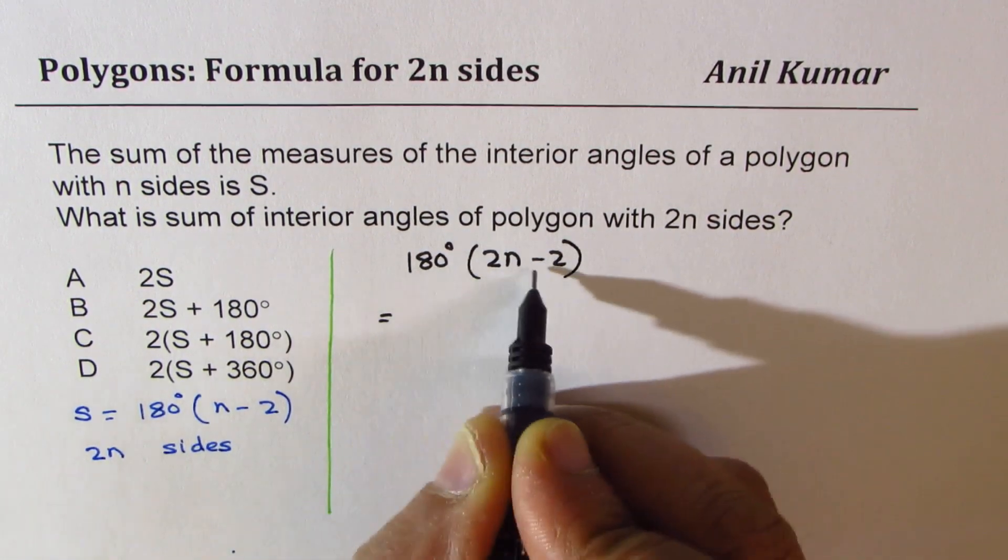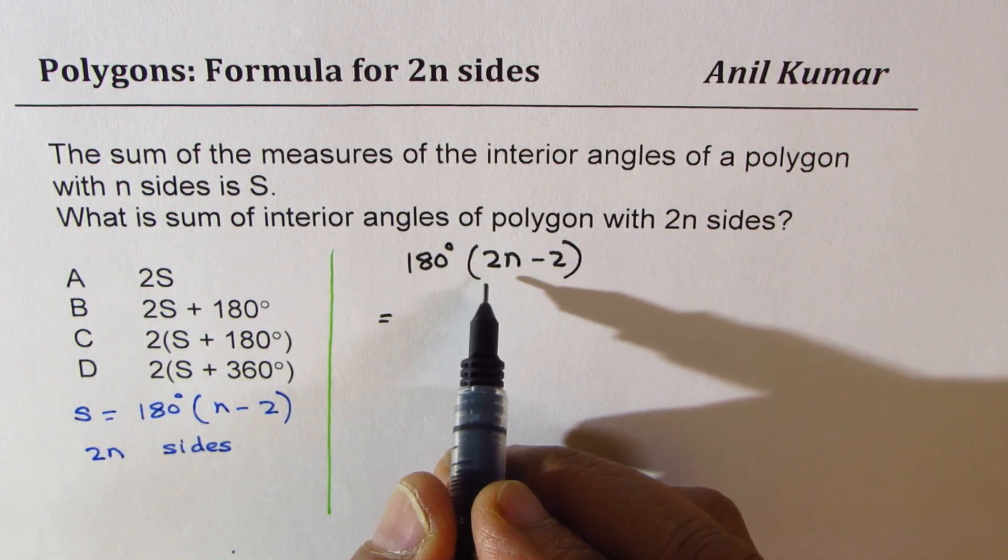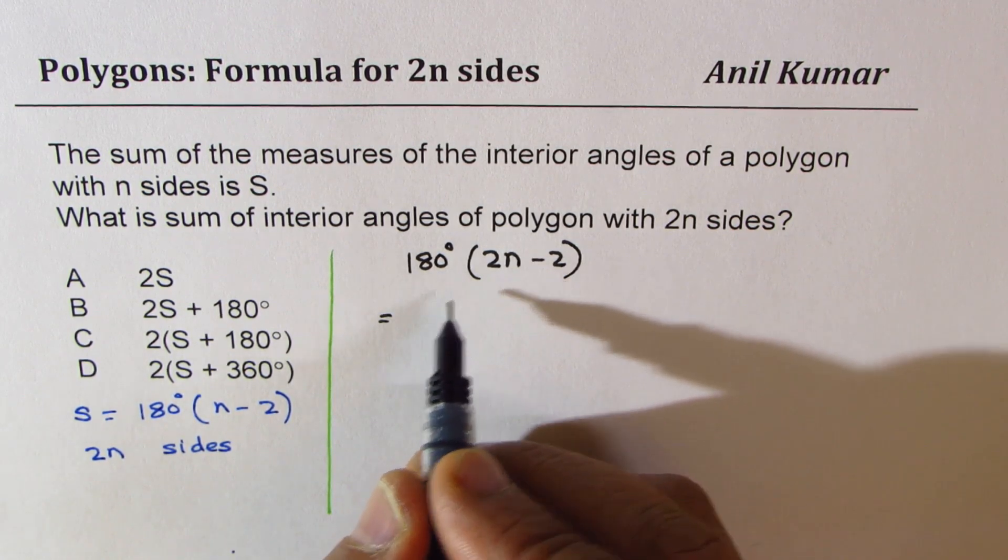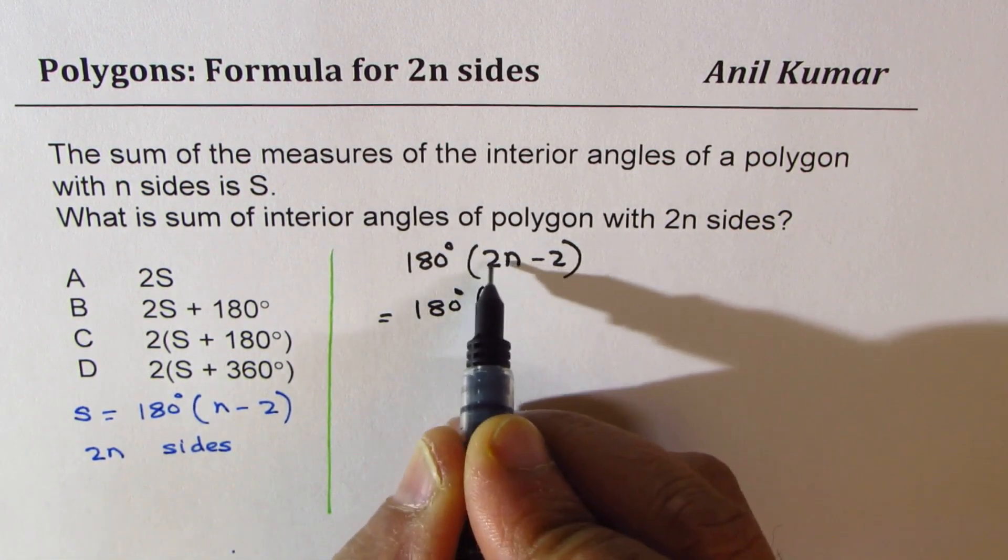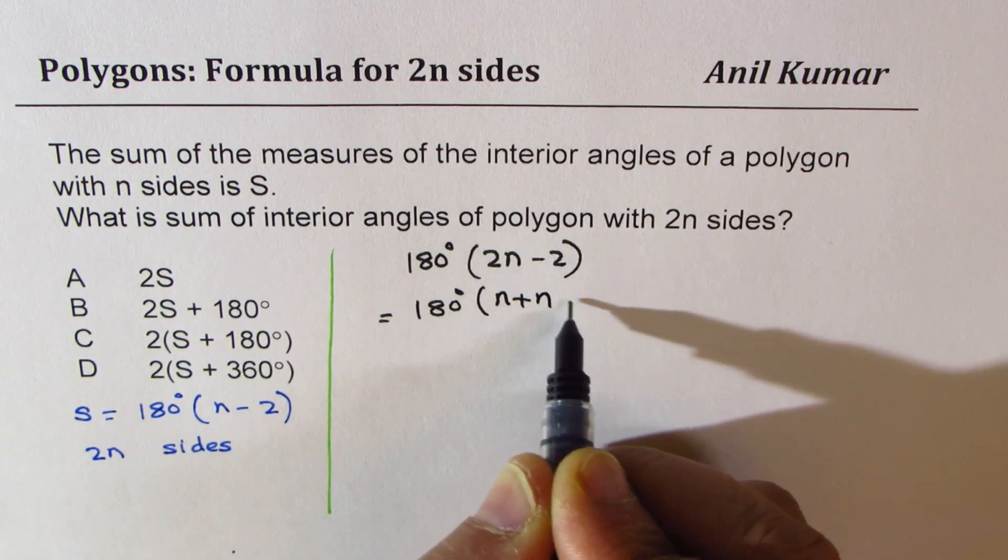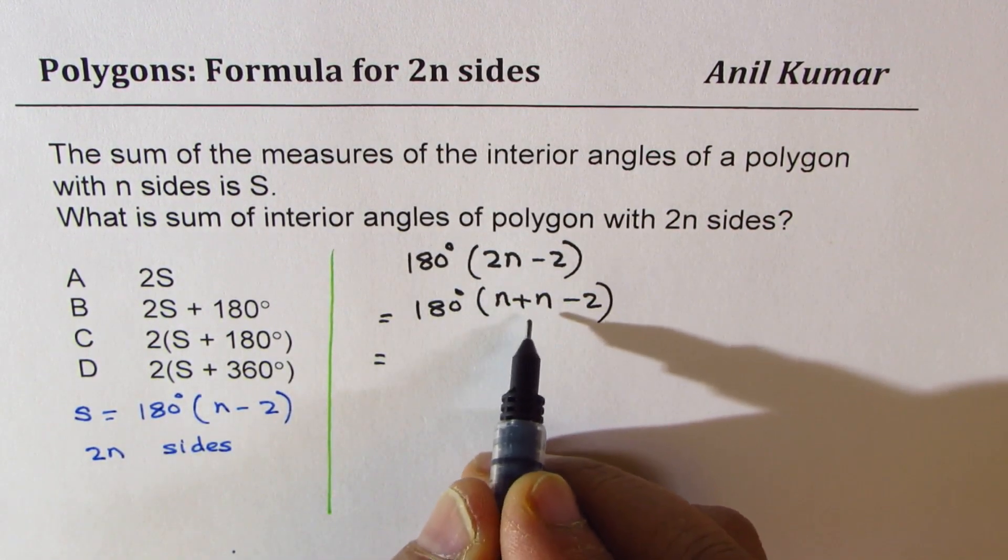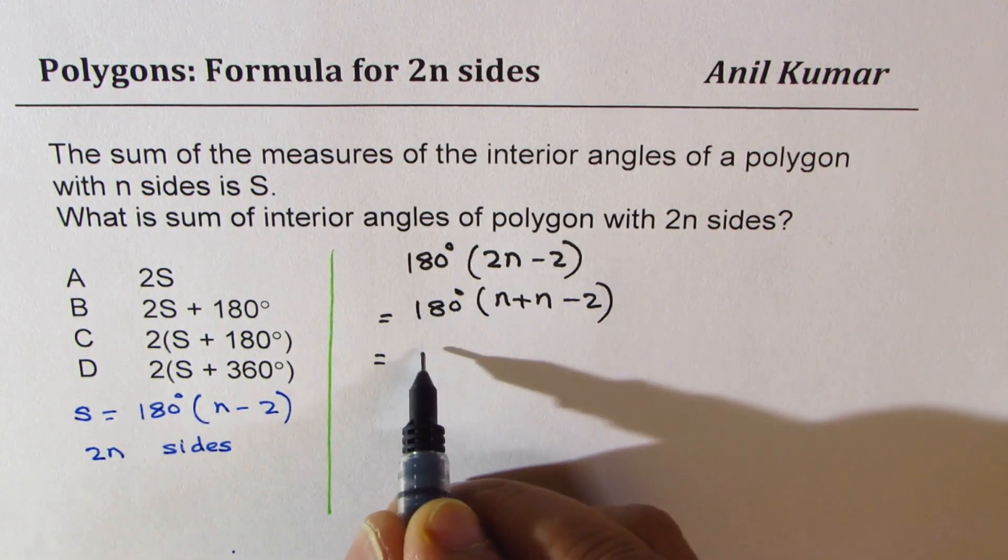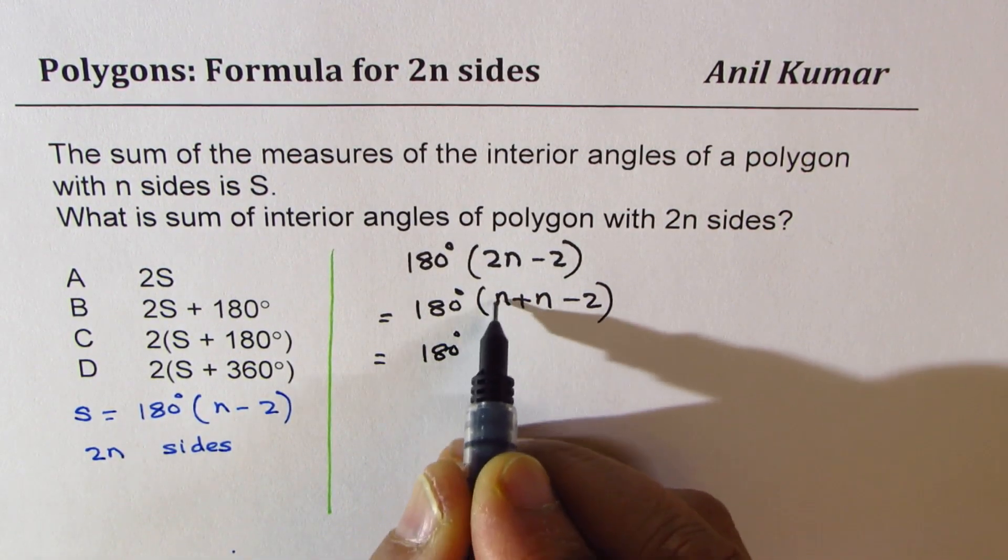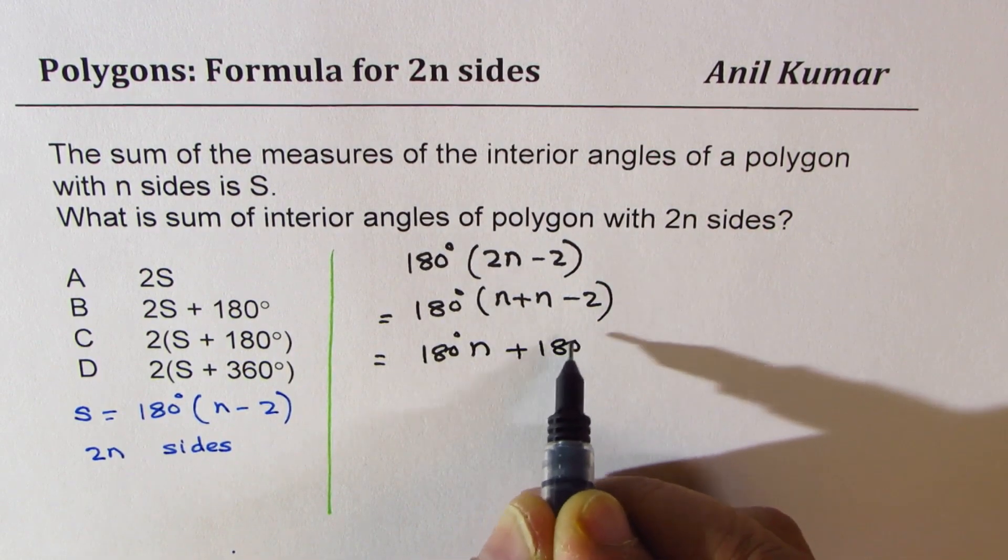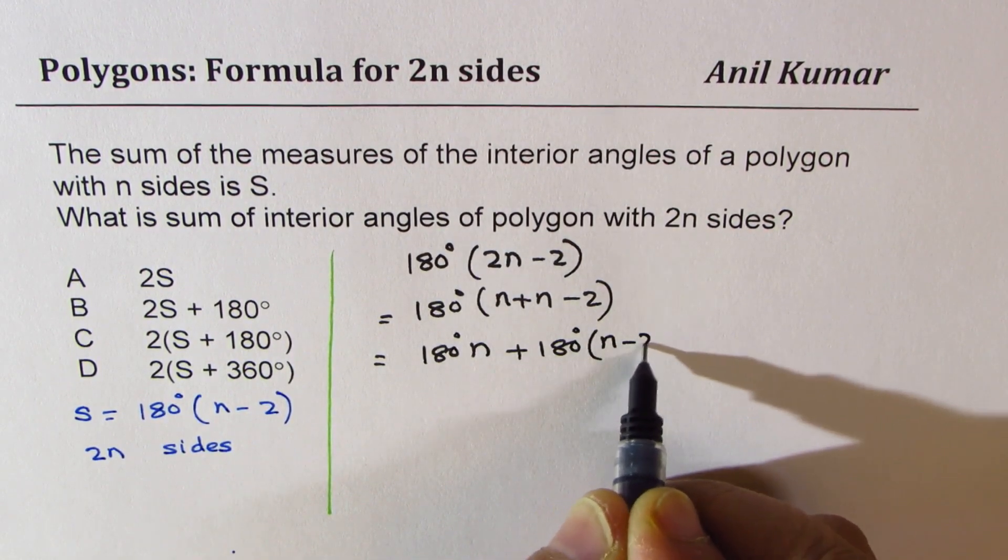Now we can always open this bracket. So when you open this bracket, we could write like this also: 180 degrees, 2n I could write like n plus n, right? Minus 2. So in that case, I'm not multiplying. Probably this will be simpler. So we could write this as 180 degrees times n plus 180 degrees times n minus 2.